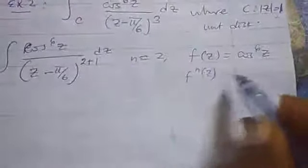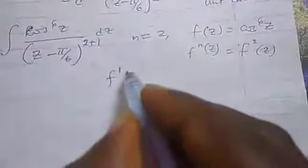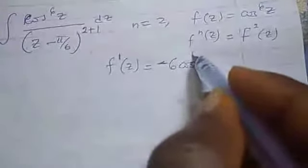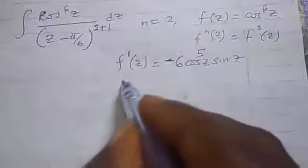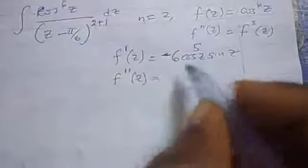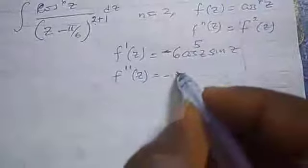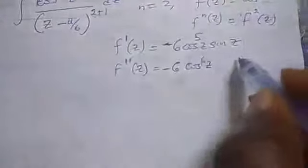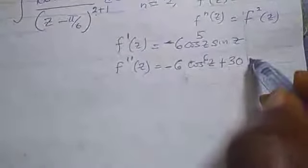To use the Cauchy Integral Formula we need fⁿ(z), so we differentiate twice. The first derivative: f′(z) = −6cos⁵(z)·sin(z). The second derivative using the product rule: f″(z) = −6cos(6z) + 30cos⁴(z)·sin²(z).